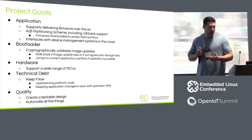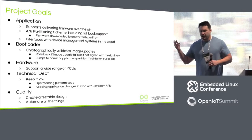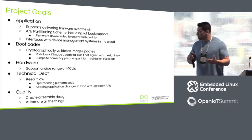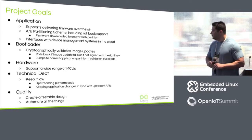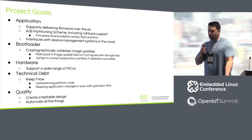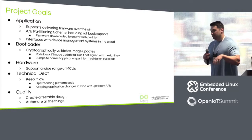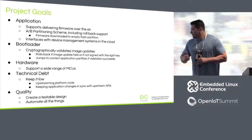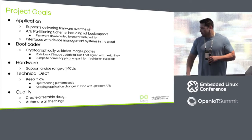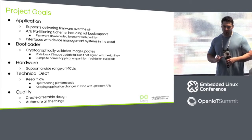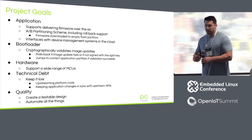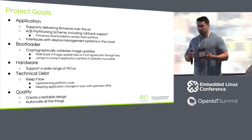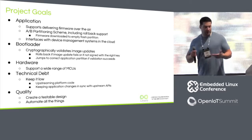Our project goals: we want to support delivering firmware over the air, which requires an A-B partitioning scheme. We basically download firmware to a scratch partition, then a bootloader cryptographically validates the images — if they succeed, we boot into them; if they don't, it rolls back. We want to support all the MCUs listed, keep our patch set low, rebase on upstream master as much as we can, upstream all platform code, and keep application changes in sync with upstream — which sounds easy to write on a slide but is very difficult in practice.